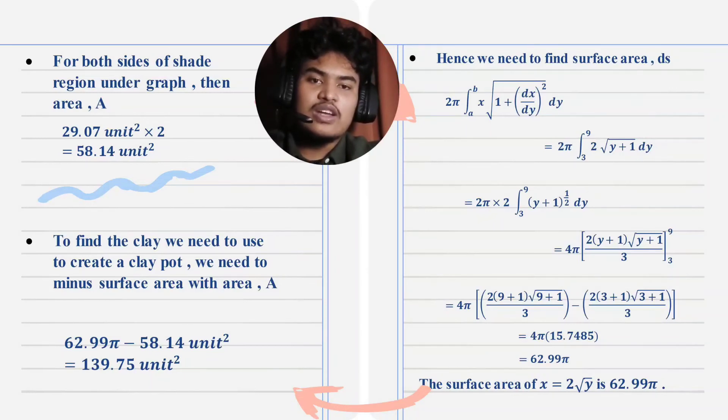Then, to find the clay we needed to use to create a flower pot out of clay, we need to subtract the surface area with the area. So, 62.99 pi subtract with 58.14 unit squared, we can get 139.75 unit squared of clay.